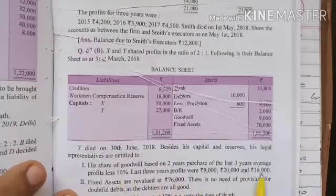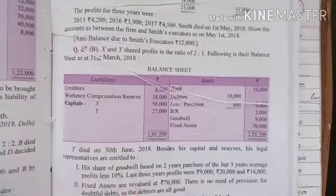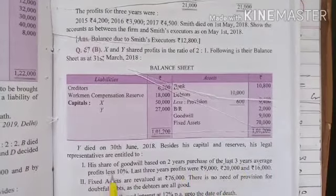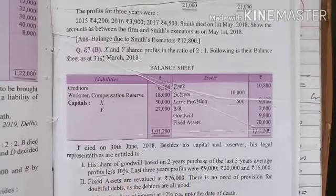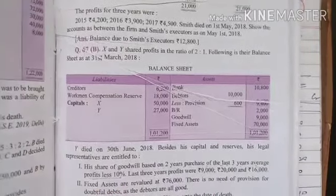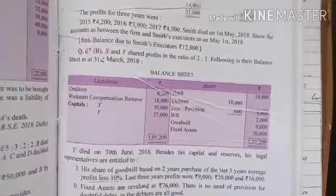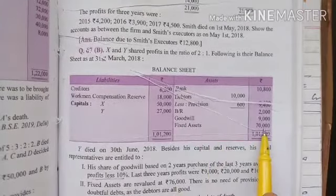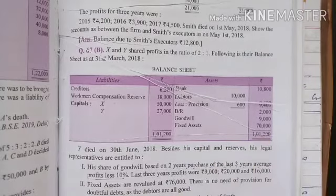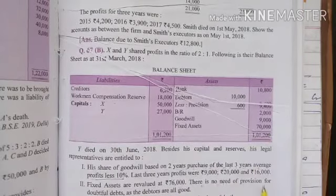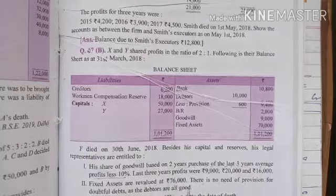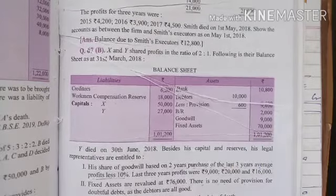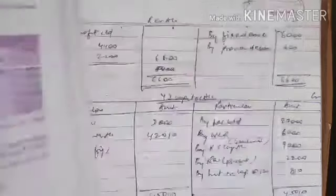Pay close attention to this line: two years' purchase of the last three years' average profit, less 10 percent. The calculation here needs to be very careful. In this question you also have to prepare a revaluation account. Fixed assets are 76,000, previously they were 70,000, so there is an enhancement of 6,000. There is no need for provision for doubtful debts as all debts are good. Interest is allowed at 12 percent per annum up to the date of death.